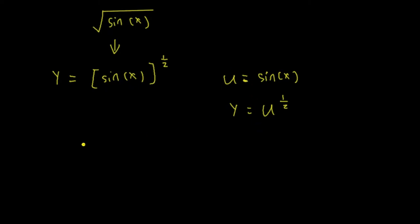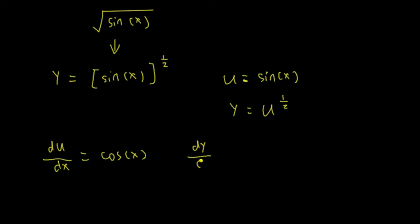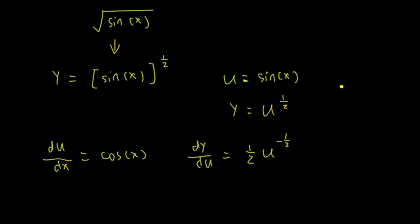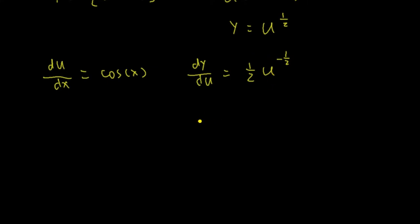We differentiate u with respect to x first. So du/dx — we know that the derivative of sin is cos. Next, we differentiate y with respect to u: dy/du is 1 half u to the power of negative 1 half. Since u equals sin, we replace u, so dy/du equals 1 half sin to the power of negative 1 half.